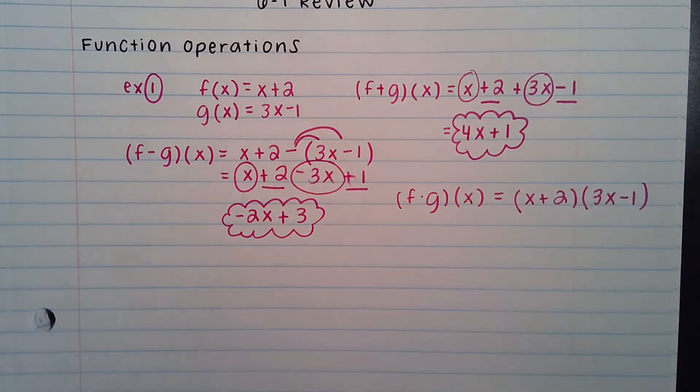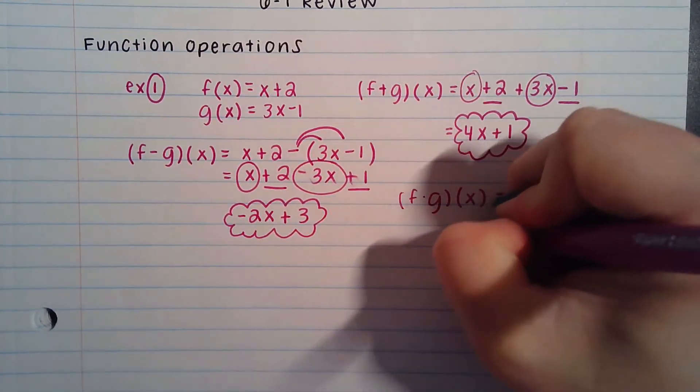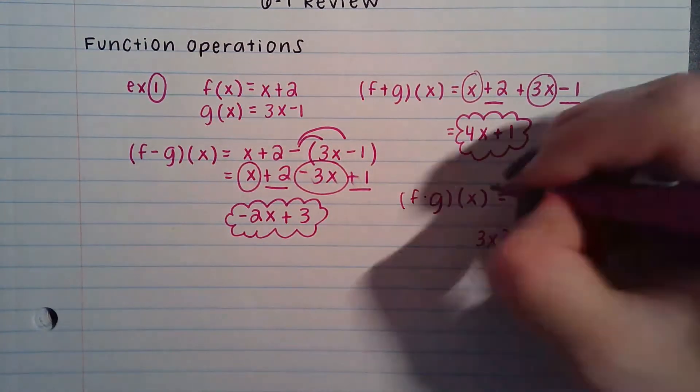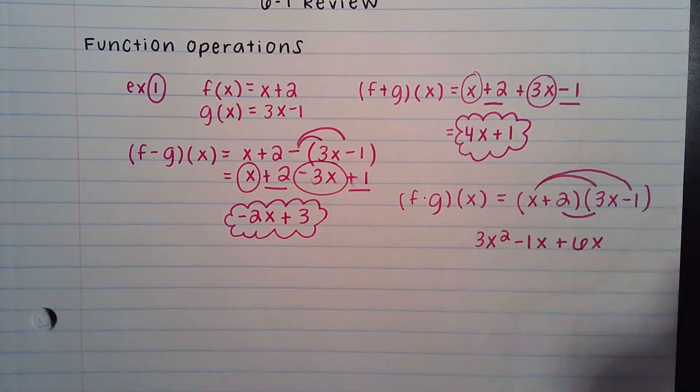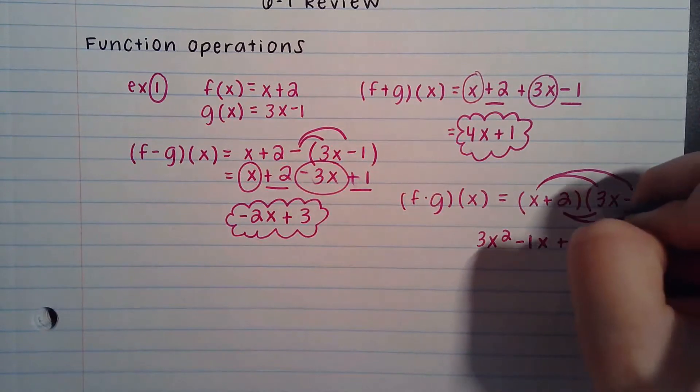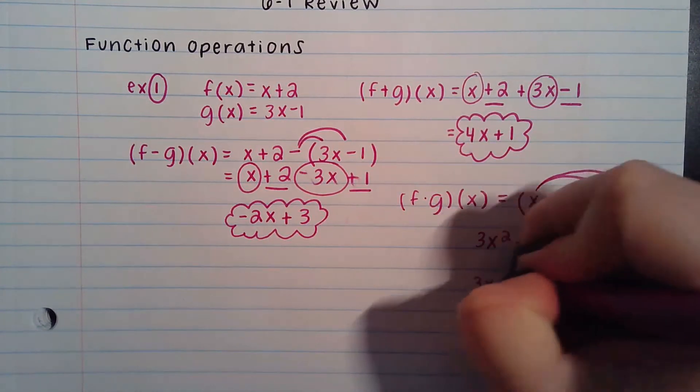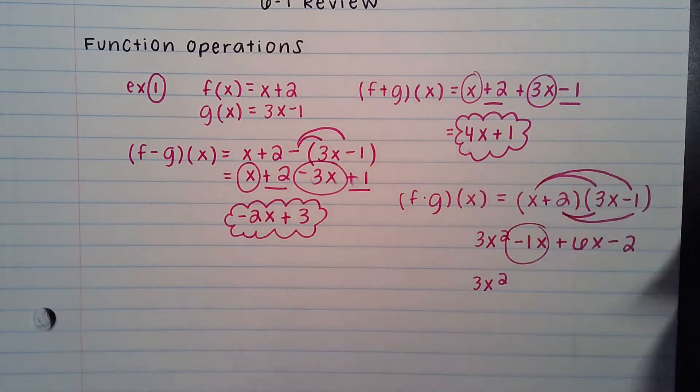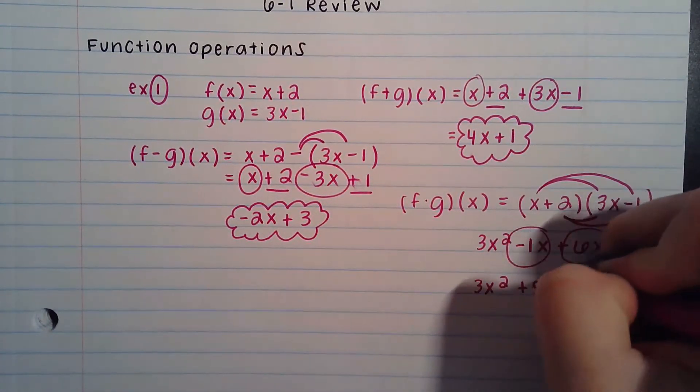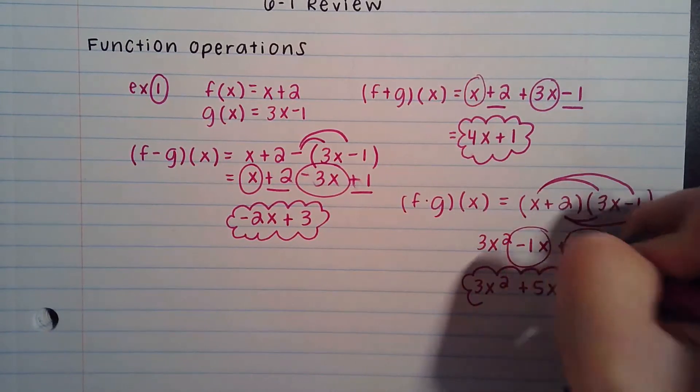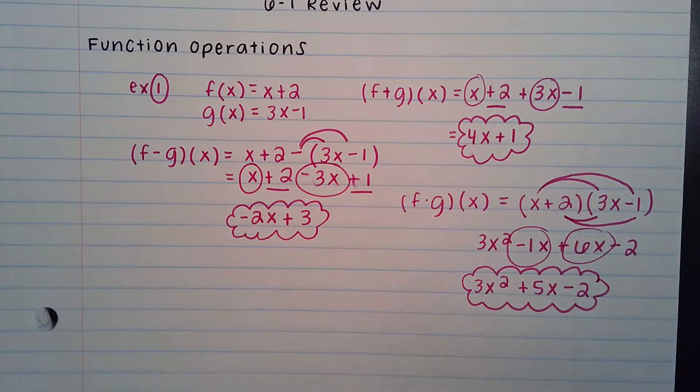By putting those in parentheses, hopefully you see that that is FOILing. x times 3x is 3x squared. x times negative 1 is negative 1x. 2 times 3x is 6x. 2 times negative 1 is negative 2. Combine any like terms. 3x squared doesn't have anything to combine with. We can put together minus 1x and plus 6x, which would give us 5x, and minus 2. There's no way to check these in your calculator, so just be very careful that you are combining like terms correctly and not making any math errors.